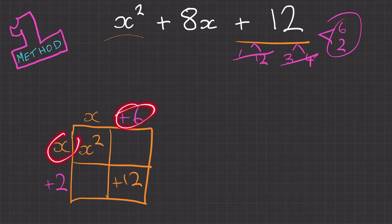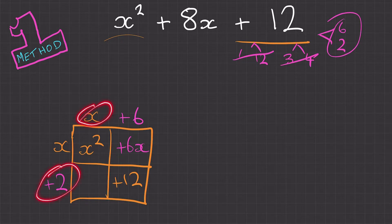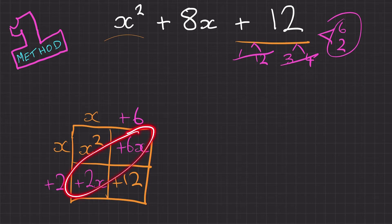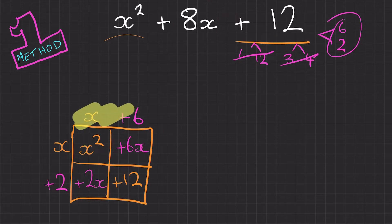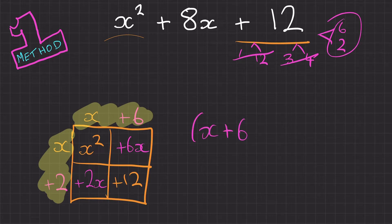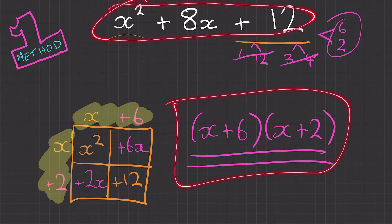Then if we multiply 6 and x we're going to be left with plus 6x and then multiply x and 2 to be left with plus 2x. So if you notice, these two here are actually added together to get this part here. So we can now look at the top row and the side column and we can get our final answer, which is going to be x plus 6 and x plus 2. And that is the quadratic expression factorised.